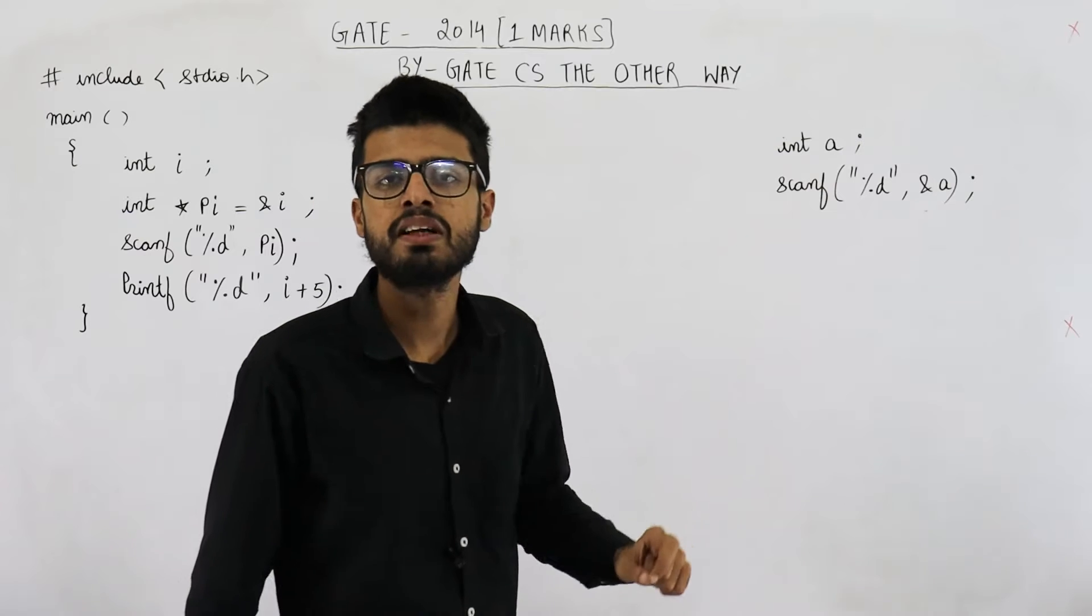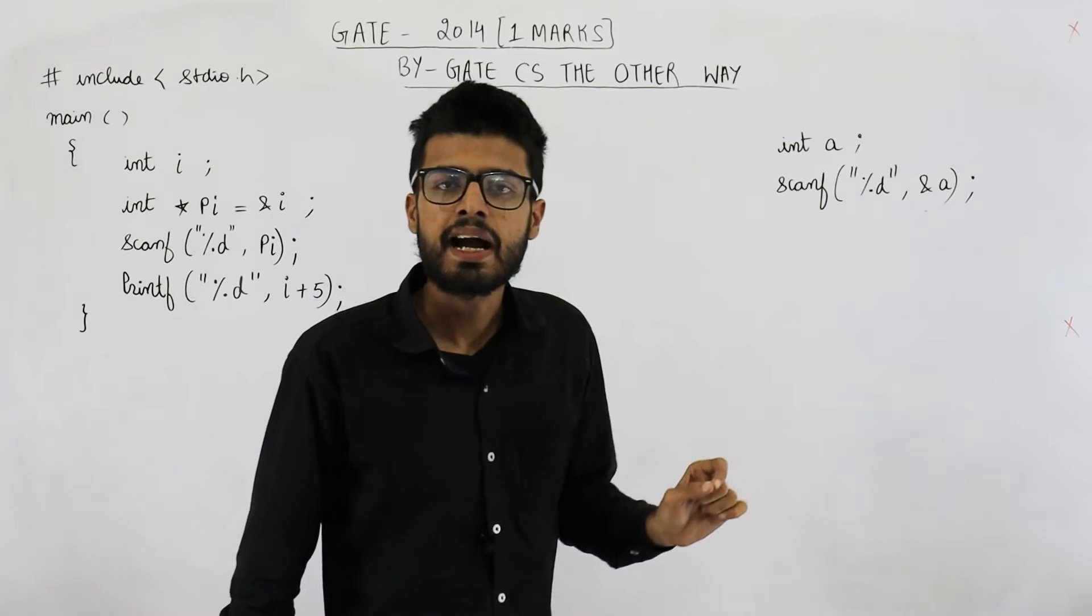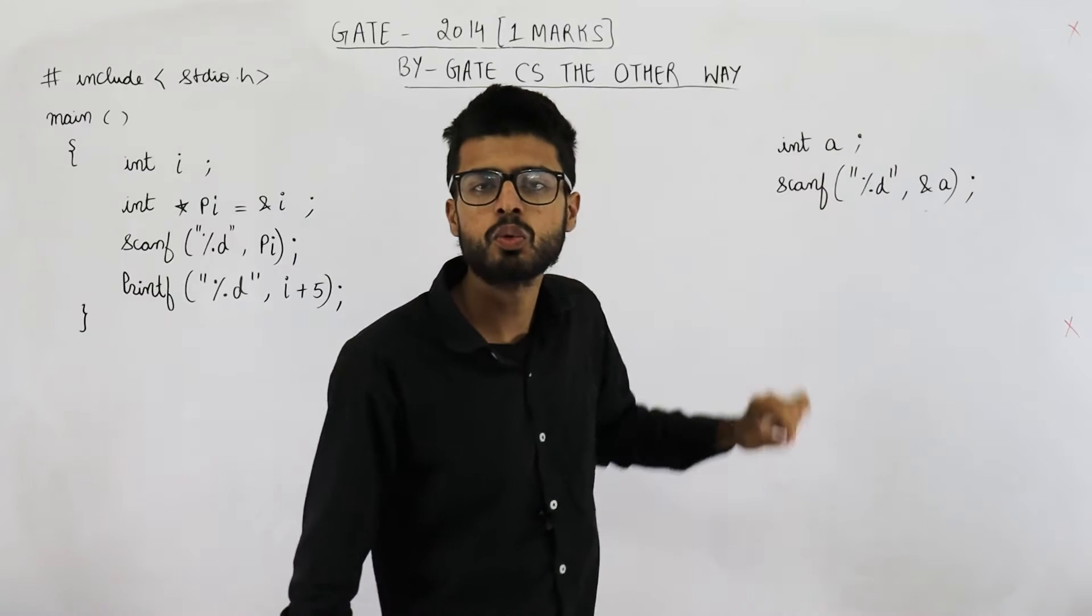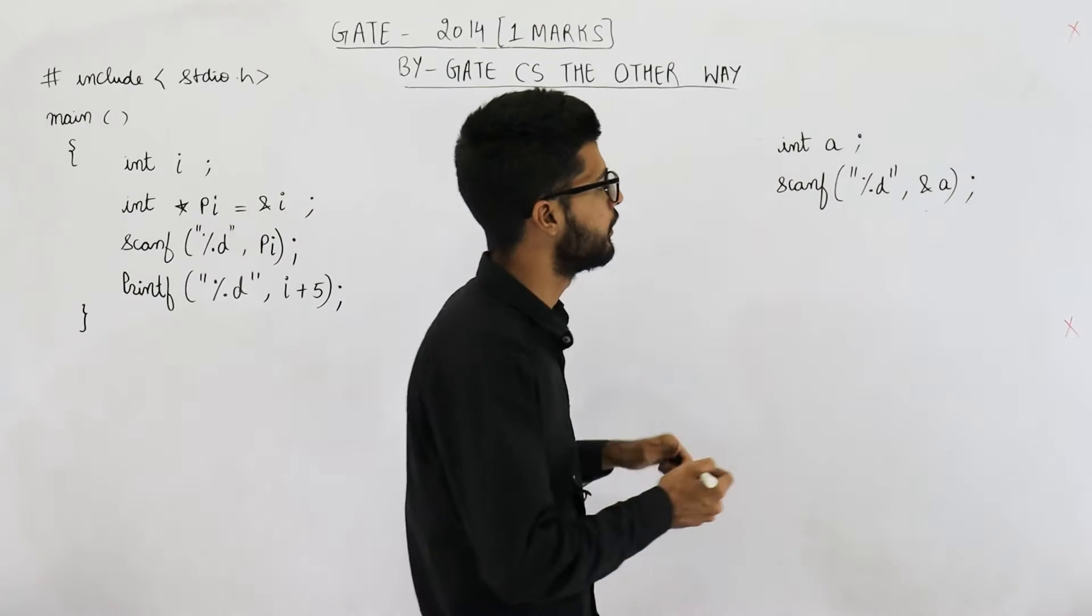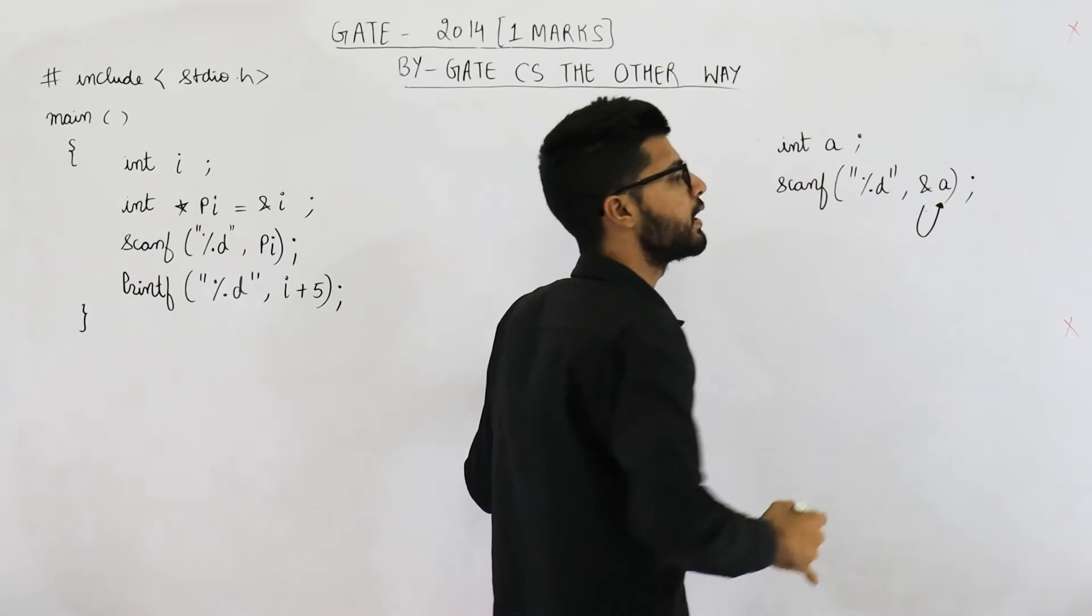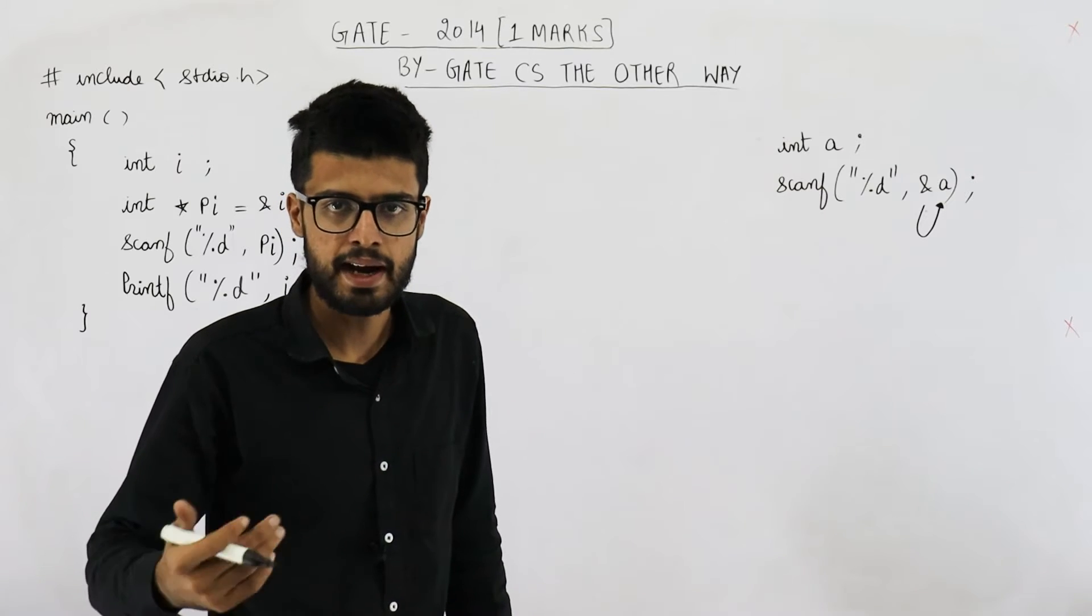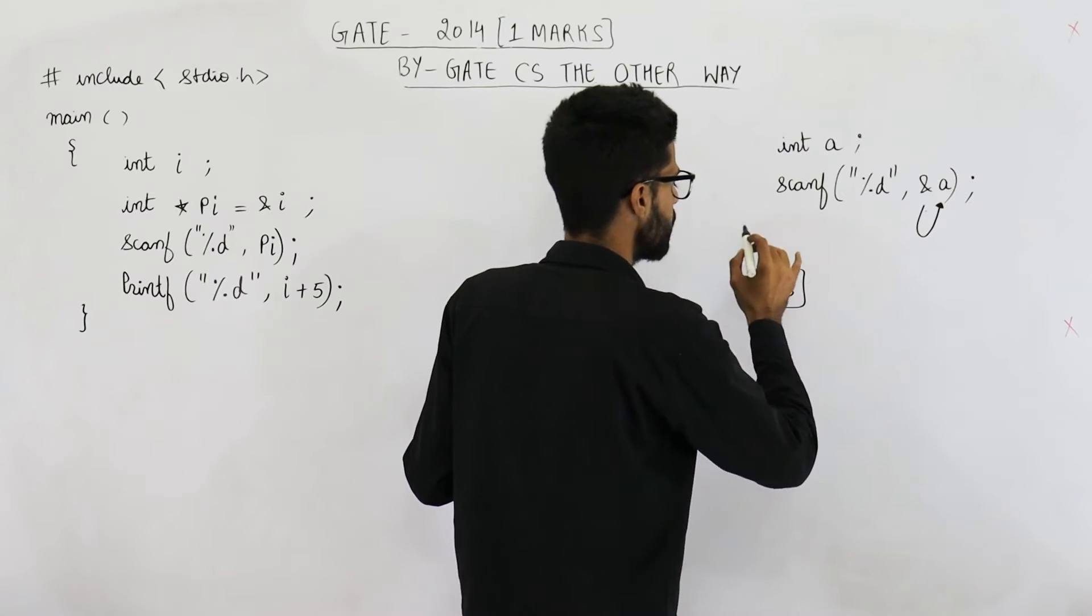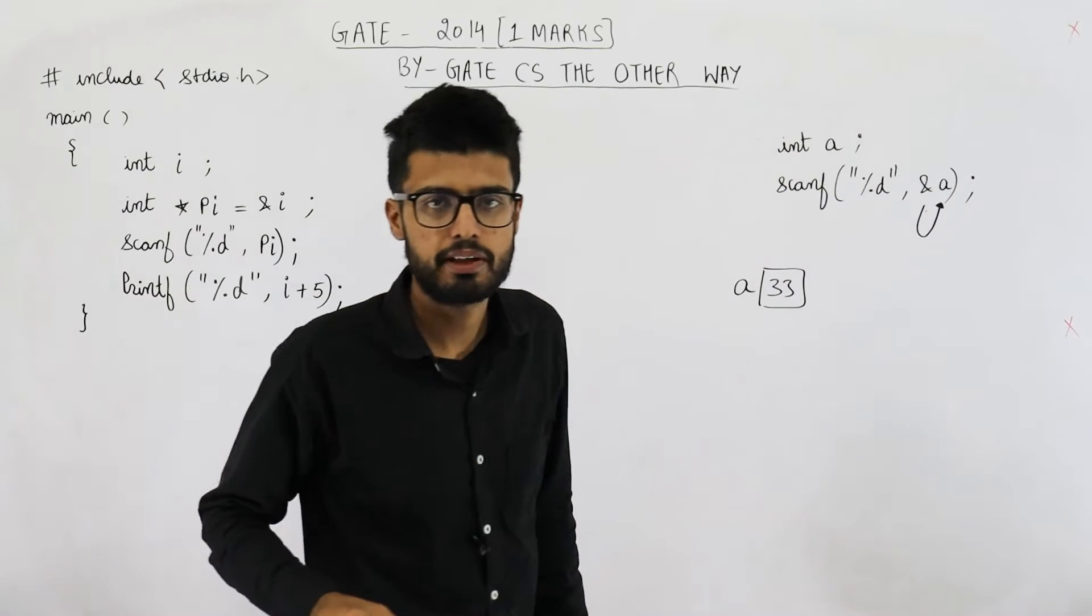First of all, let us see how can we take an input from user. Suppose I've declared this integer A and I want an integer to be taken as input from user and I want it to be saved in variable called A. So I will write scanf %d &A. & means the address of operator. So whatever is address of this variable A, at that address save whatever user has entered. If user enters 33, 33 is going to be saved in this variable called A. So the thing is in scanf we need to pass address of a variable.